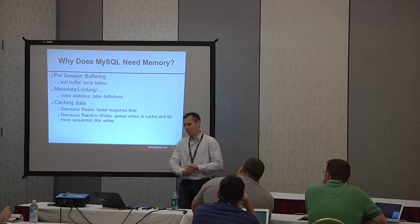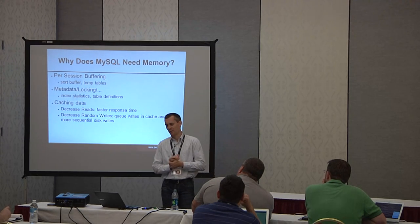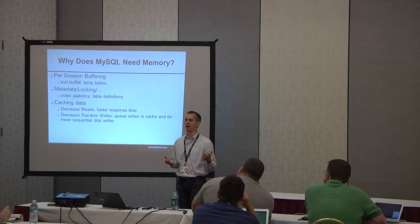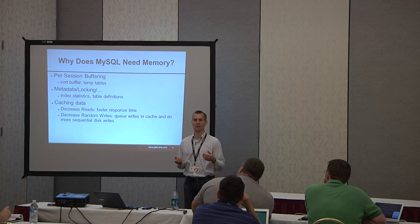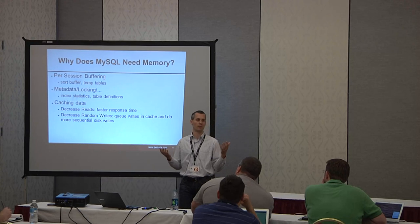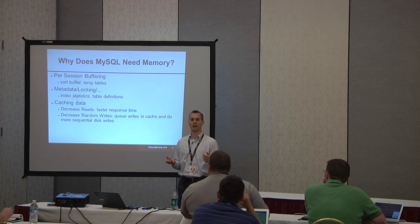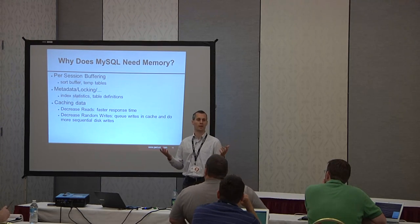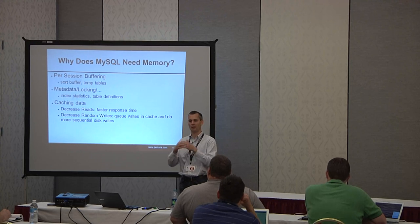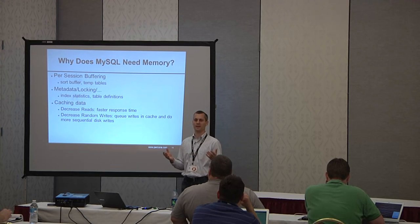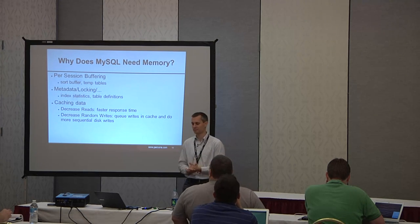The third area is things like the .frm files, which get cached in memory, and the binary logs, which use some measure of memory on the host. The binary logs help set up a replication environment so we can have slaves and offload some reads. Those depend on the OS cache, so some measure of memory gets allocated to that.